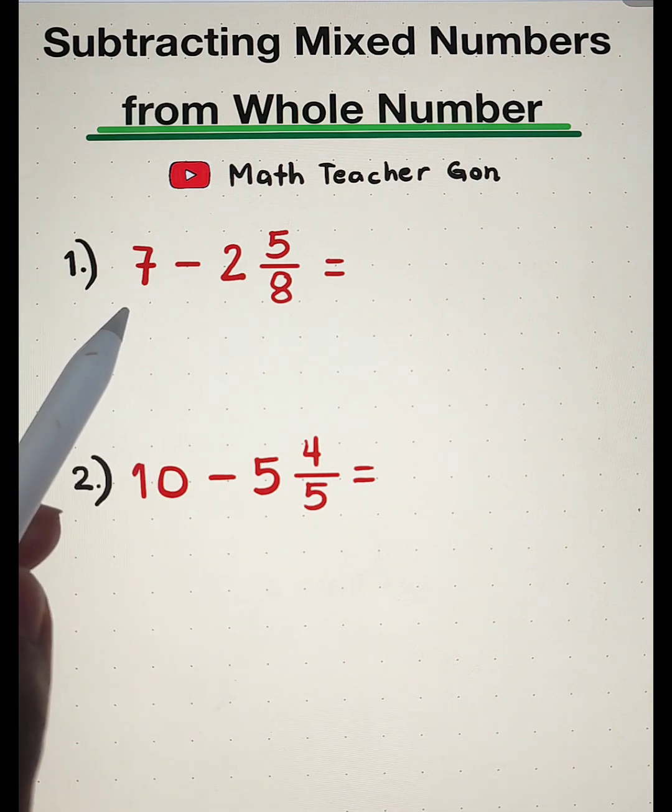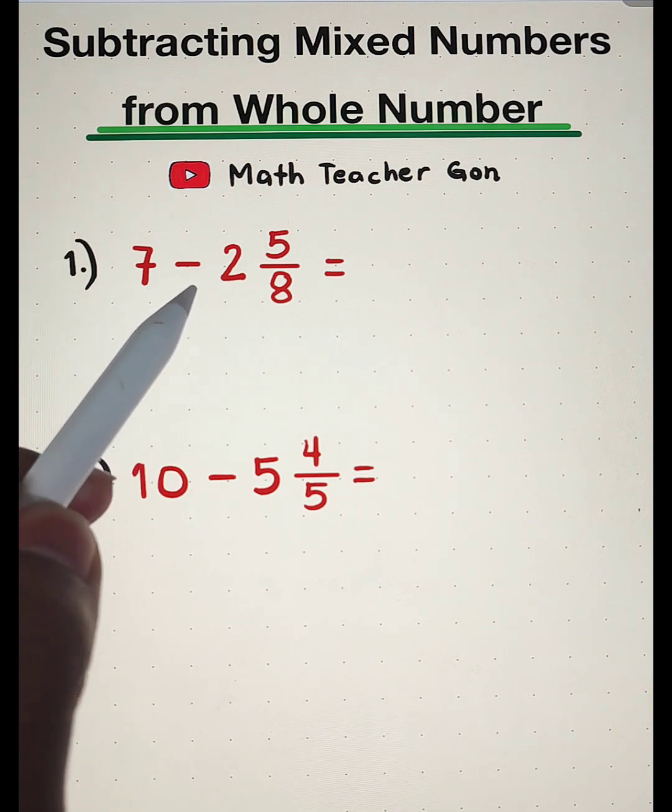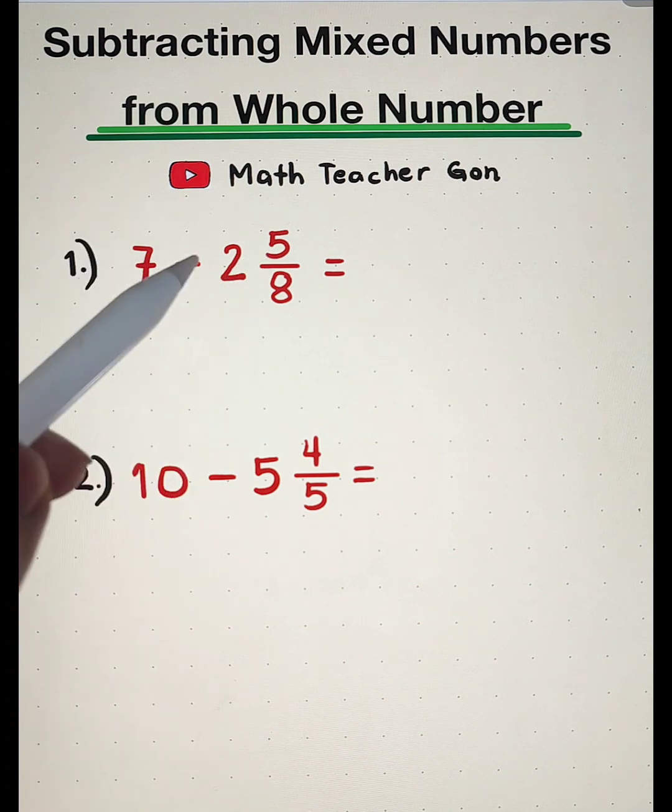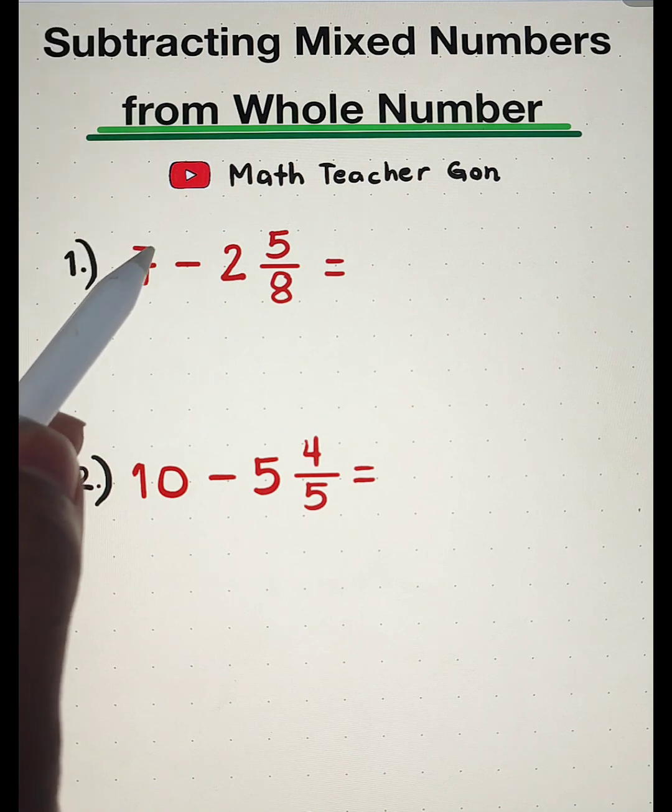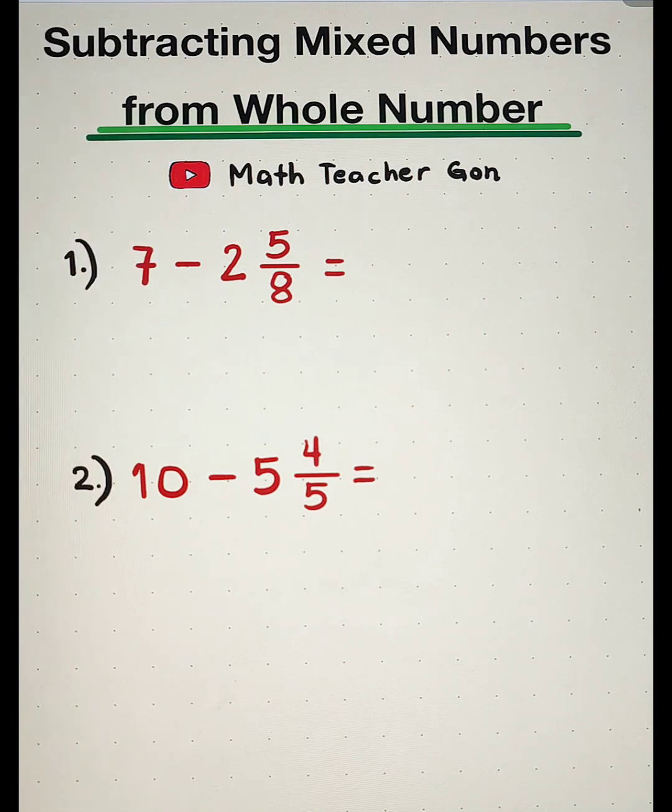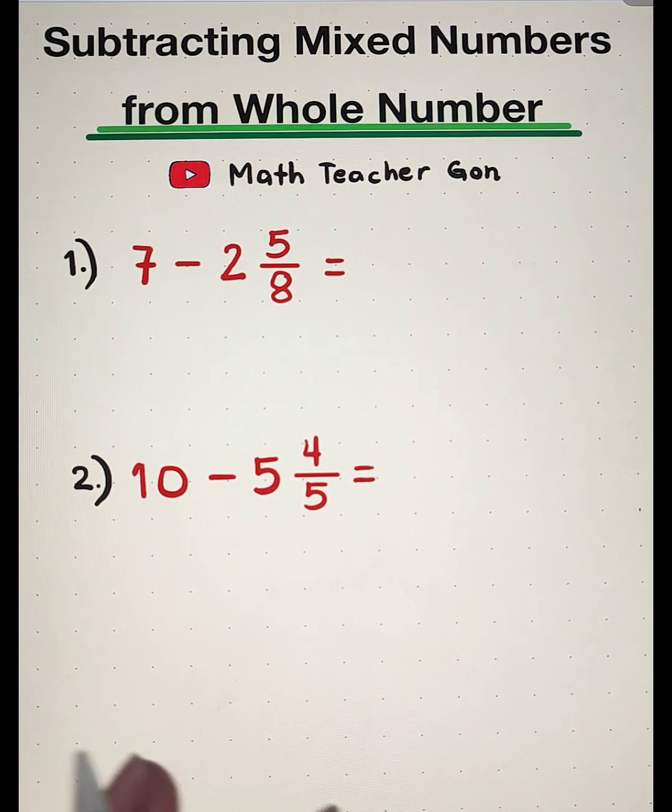What we have here is item number 1, 7 minus 2 and 5 over 8. As you can see, we will try to subtract this mixed number from this whole number. There are plenty of ways on how to do this, but I will try to teach you the fastest way on how to do this, and even you can do this mentally.